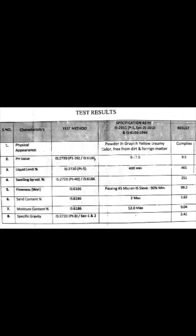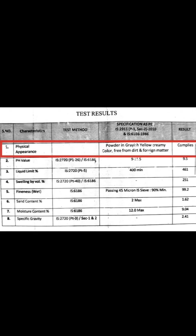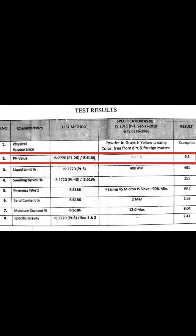Bentonite testing as per IS code. First is physical appearance: powder in grayish-yellow creamy color, free from dirt and foreign matter. Second is pH value. Test method is IS code 2720 part 26 or IS code 6186. Limit is 9 to 11.5. Result: 9.5.